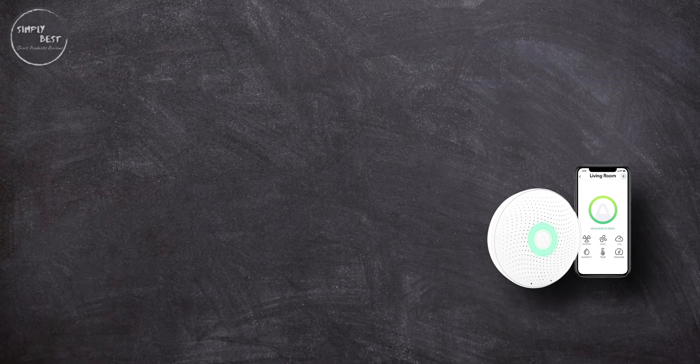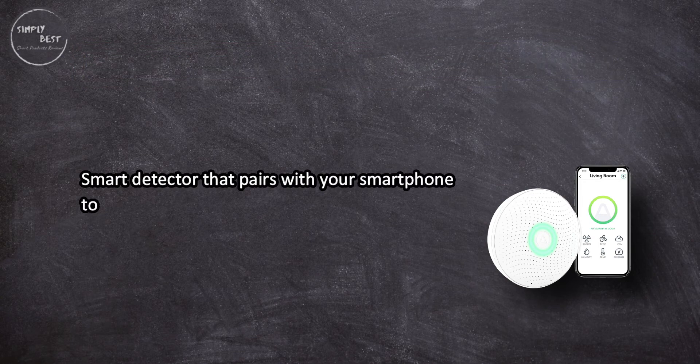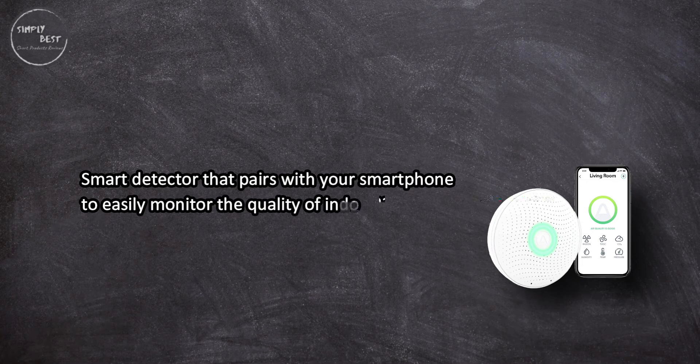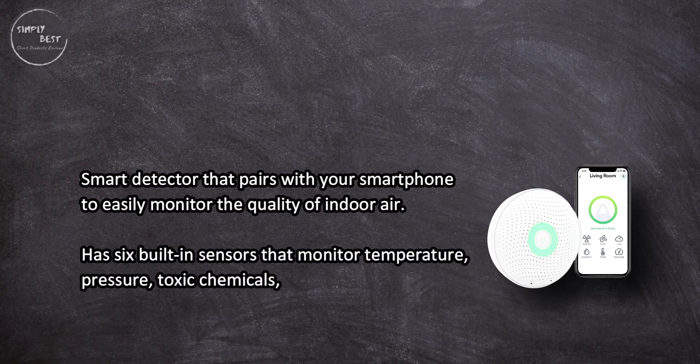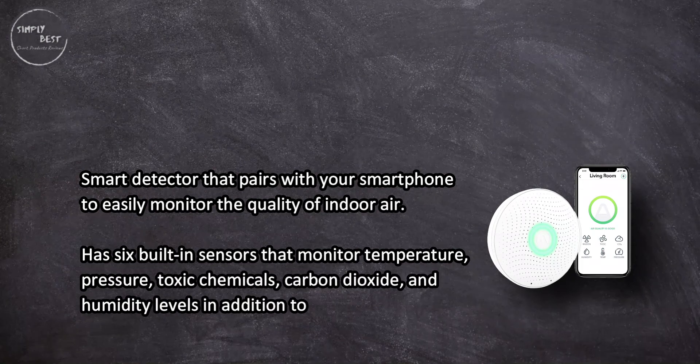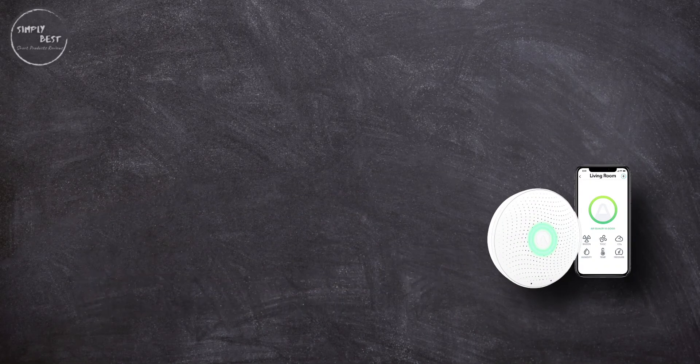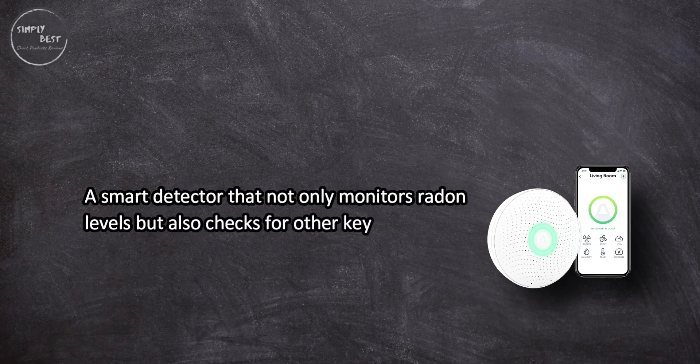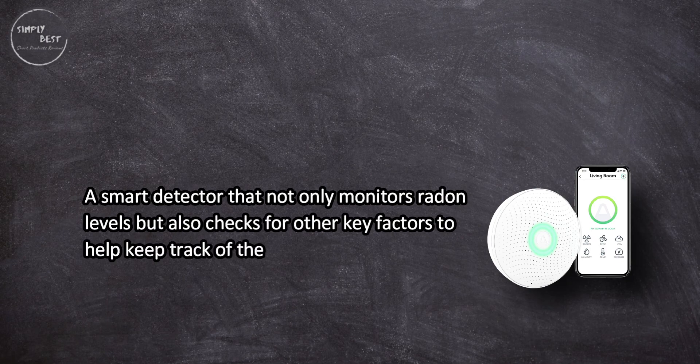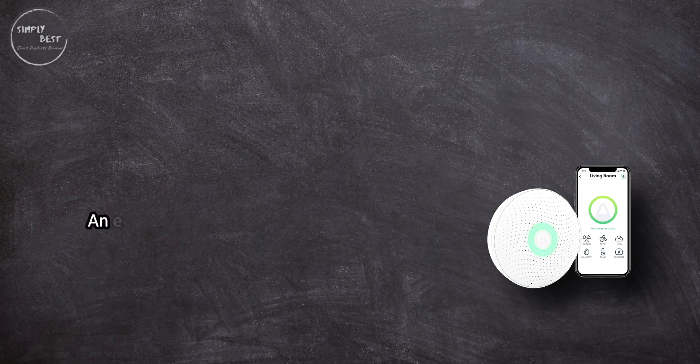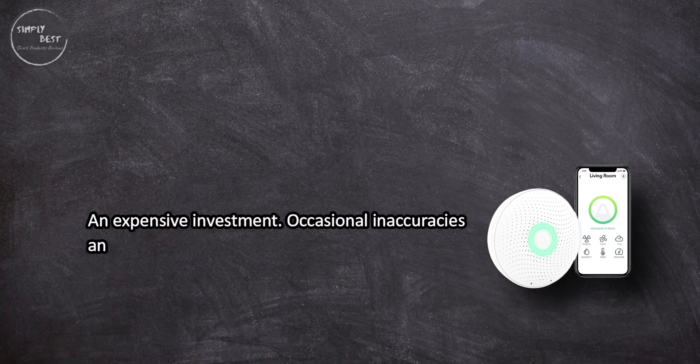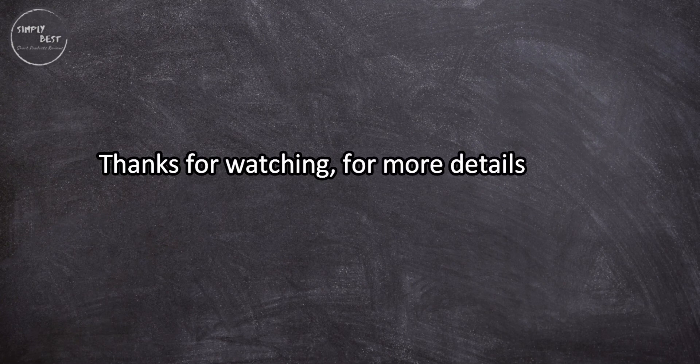At number one: Air Things 2930 Wave Plus Radon and Air Quality Monitor. Smart detector that pairs with your smartphone to easily monitor the quality of indoor air. Has six built-in sensors that monitor temperature, pressure, toxic chemicals, carbon dioxide, and humidity levels in addition to radon. A smart detector that not only monitors radon levels but also checks for other key factors to help keep track of the air quality in your home. Most comprehensive. An expensive investment. Occasional inaccuracies and software bugs noted.